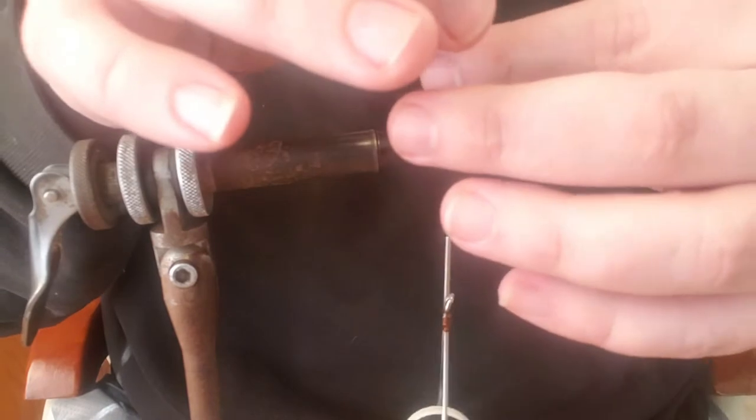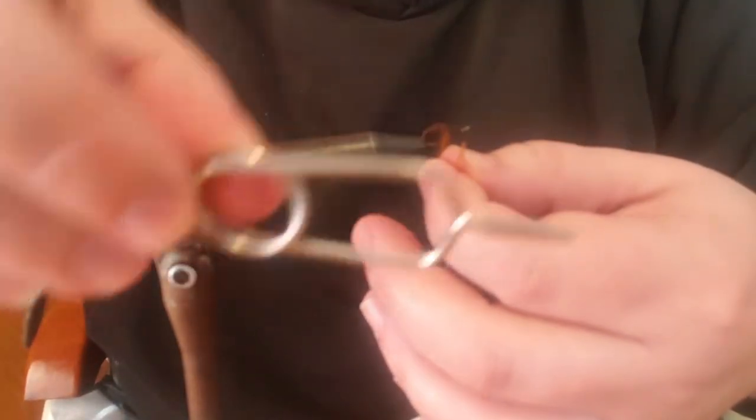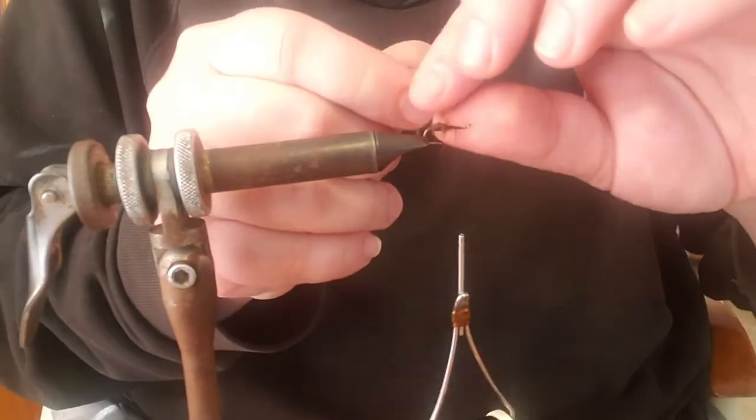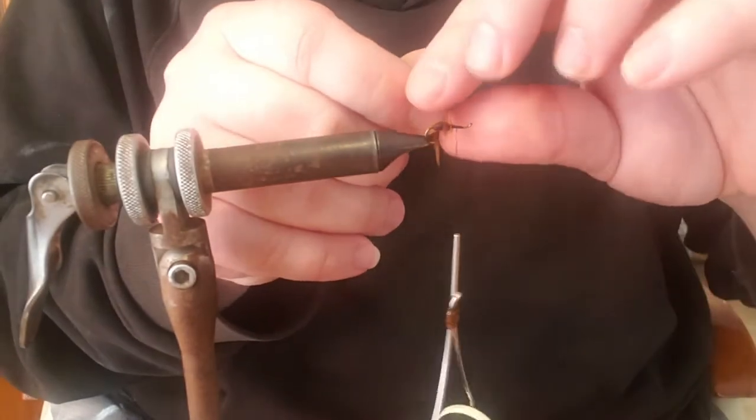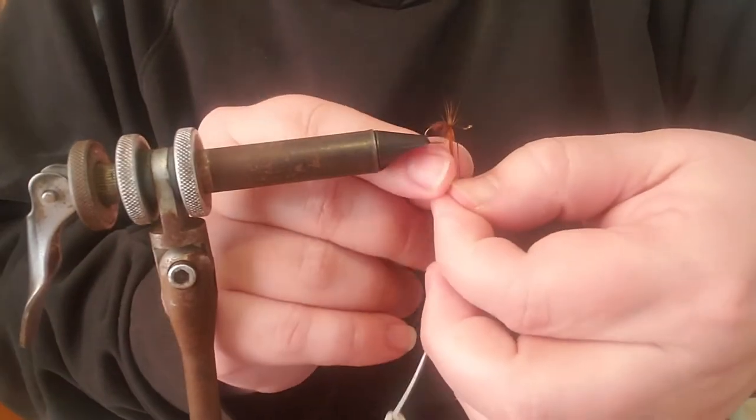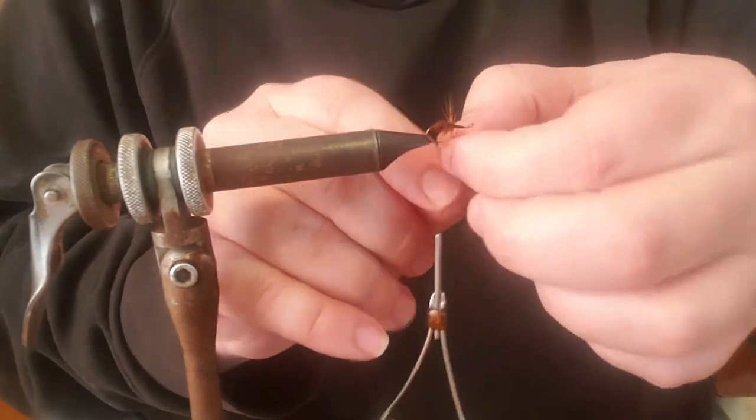Back a bit. Now you can use your hackle pliers if you want, just grip it. I usually don't bother unless it's a smaller piece. You're going to give this just a couple wraps, three wraps.